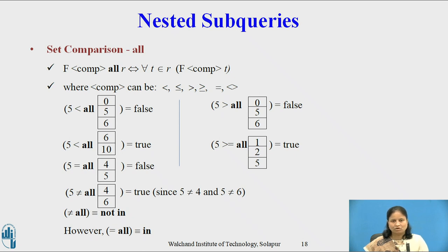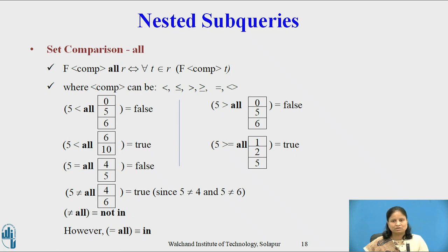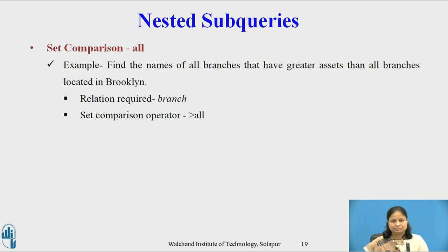Set Comparison using the ALL operator: F comparison_operator ALL R — this is equivalent to: for all t belonging to R, F comparison_operator t. Comparison operators can be <, <=, >, >=, =, and !=. Note some examples using the ALL operator. For example, find the name of all branches that have greater assets than all branches located in Brooklyn. The relation required is branch and the set comparison operator used is greater than ALL.